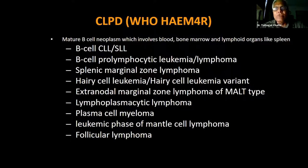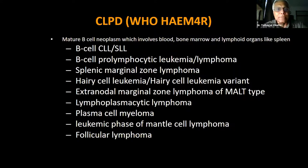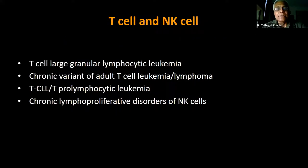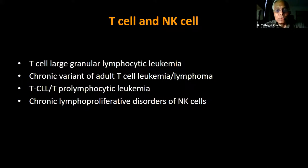In WHO Heme 4R — the 2016 fourth revised edition — mature B-cell neoplasms involving blood, bone marrow, and lymphoid organs included B-cell CLL/SLL, B-cell PLL, splenic marginal zone lymphoma, hairy cell leukemia and its variant, extranodal marginal zone lymphoma of MALT, lymphoplasmacytic lymphoma, plasma cell myeloma, and the leukemic phase of mantle cell and follicular lymphoma. Similarly, T-cell and NK-cell entities included T-cell LGL leukemia, chronic adult T-cell leukemia/lymphoma, TCLL, TPLL, and chronic lymphoproliferative disorders of NK cells — all of which are now viewed differently in WHO 2022.